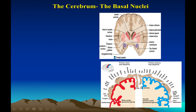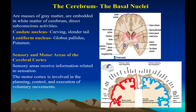Similarly, you can see that a large area of sensory cortex is devoted to the lips, which are very sensitive. This is the sensory and motor representation in the cerebral cortex.